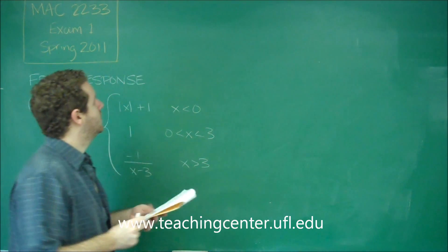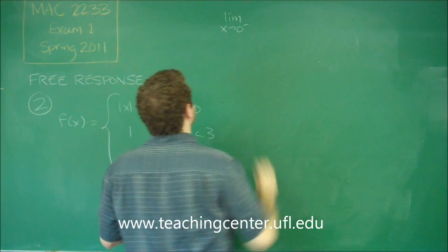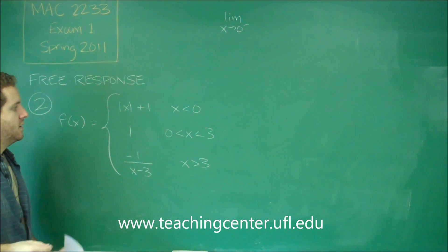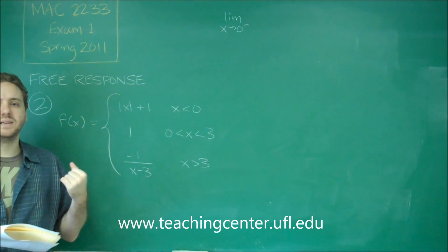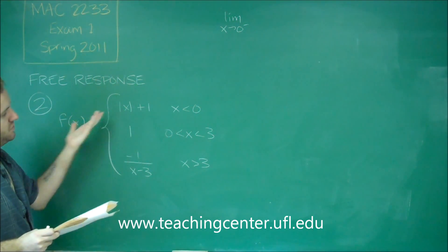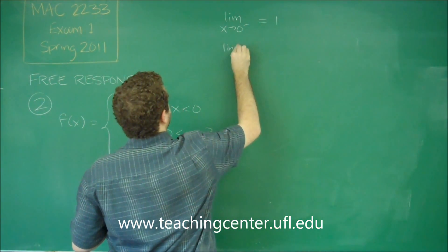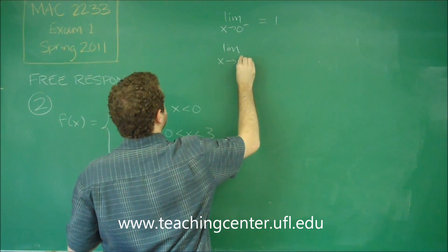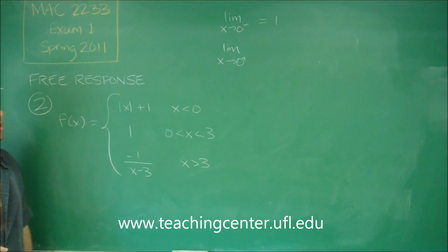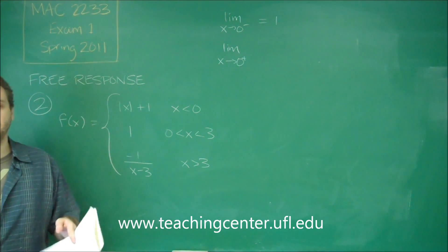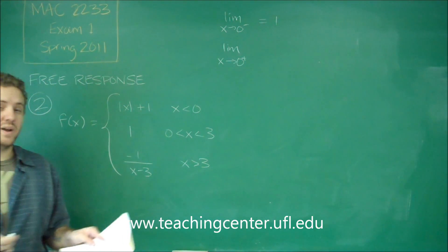Let's figure out what all those are. The limit as x approaches zero from the left uses the top function because that's the one with values less than zero. If we plug in zero, we get absolute value of zero plus one, so this would be one. Remember that when doing limits, unless there's a problem dividing by zero, you can always use direct substitution — you just have to make sure you're using the correct function.